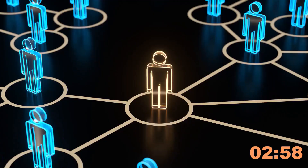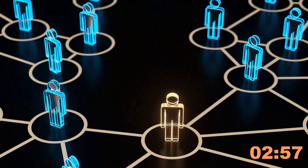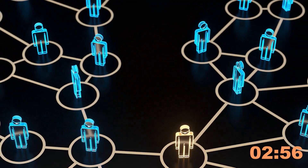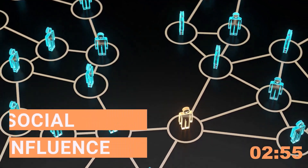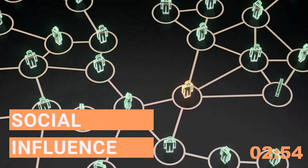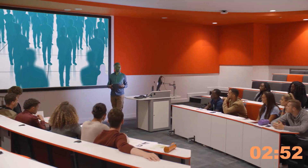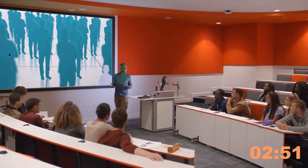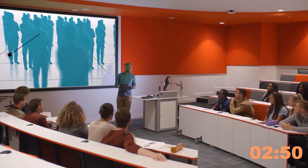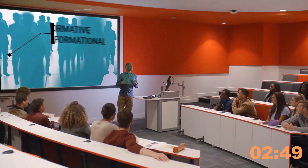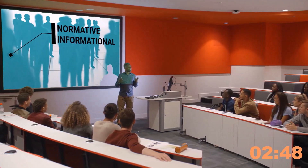Our attitudes, beliefs and behaviours are often shaped by those around us, a phenomenon known as social influence. Broadly, psychologists consider two types of social influence: normative and informational.